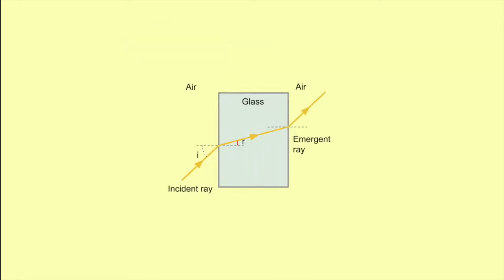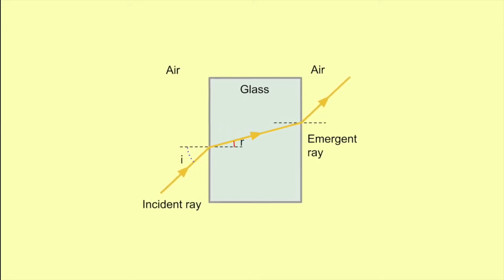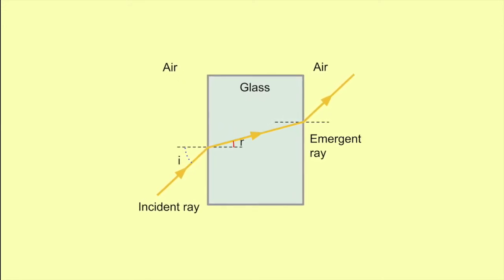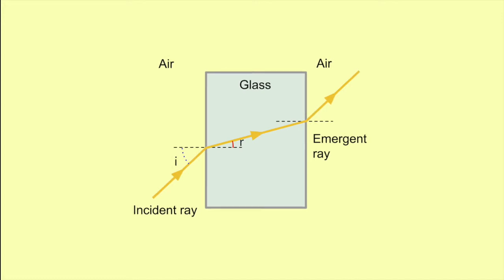Let's use air and glass as our medium. This is a glass block and the area around it is the air. Similar to reflection, the incoming ray of light is called the incident ray. The line at right angles to the side of the block is called the normal. The angle between the incident ray and the normal is the angle of incidence. The ray is refracted or bent towards the normal as it enters the glass block. This ray is now called the refracted ray. The angle between the refracted ray and the normal is called the angle of refraction.